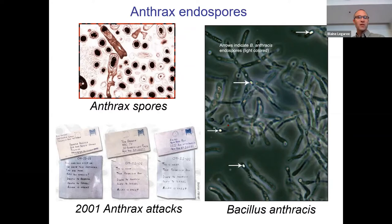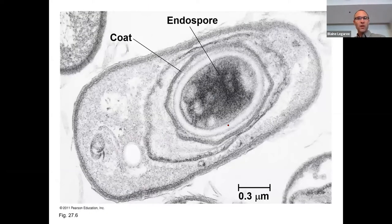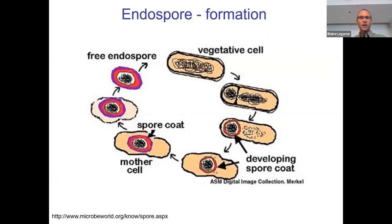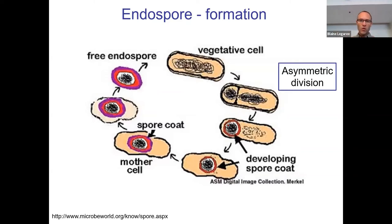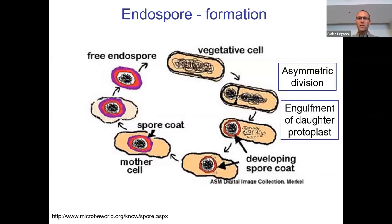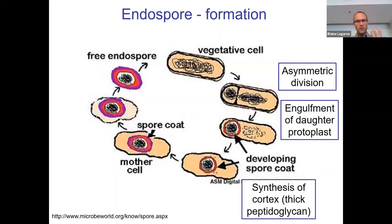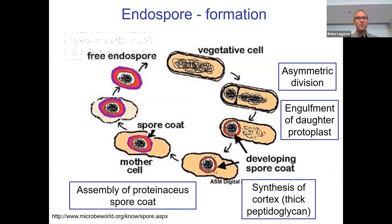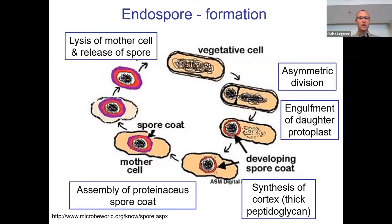Endospores are very tough, dormant structures — you can send them in the mail, they can survive being dried, and then they can re-germinate. You can see the nucleoid in the middle surrounded by that coat of peptidoglycan, which is thicker than normal, and sometimes the outer layer can be sloughed off and the endospore remains — even smaller than a bacterial cell. This diagram shows how they form: a vegetative cell undergoes asymmetrical division, protecting one copy of the genome, which gets engulfed and surrounded by thick peptidoglycan before being released.